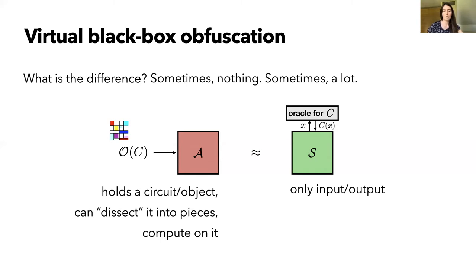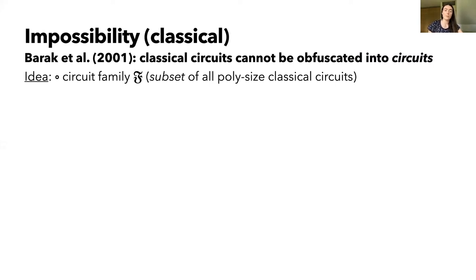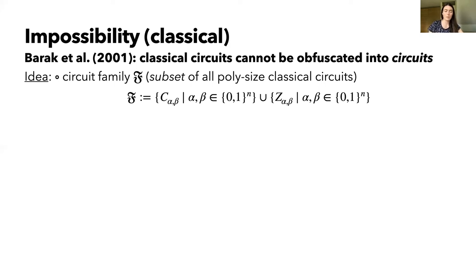In 2001, Barak et al showed the existence of such unobfuscatable function families. They did so by defining circuits where the adversary could really take advantage of the fact that they held this concrete obfuscation object in their hand and could break it up into individual parts or individual gates. Since our result will be a generalization of this classical impossibility result, I will explain some details of this unobfuscatable family. It will be a family F of circuits parameterized by alpha and beta, consisting essentially of two types: circuits we call C_alpha_beta and circuits we call Z_alpha_beta. In total, this is still a subset of all polynomial-size classical circuits, but if one can show that already this subset is unobfuscatable, then certainly the set of all poly-size classical circuits is also unobfuscatable.